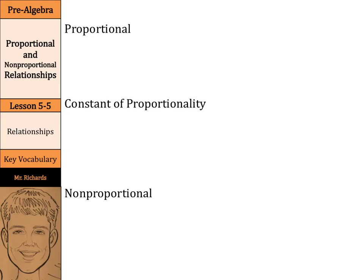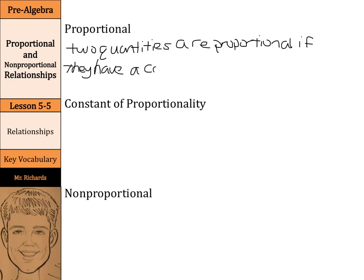Basically, two quantities are proportional if they have a constant ratio or rate. The constant ratio is called the constant of proportionality.